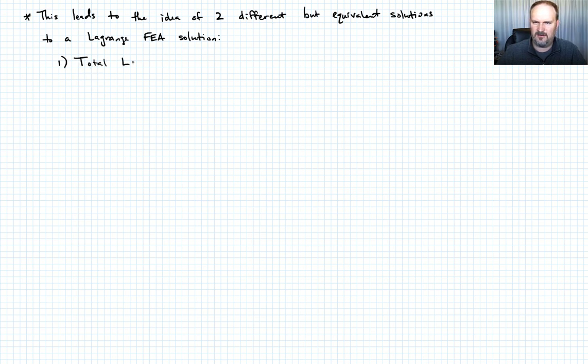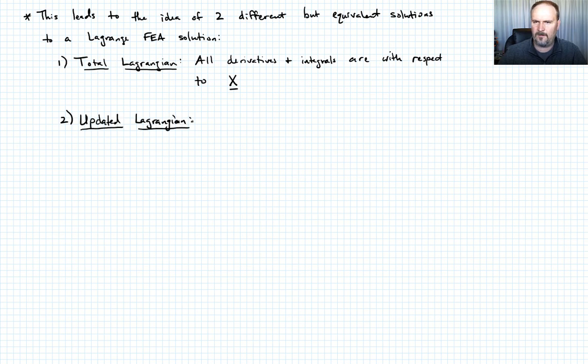So the total Lagrangian approach, all of the derivatives and integrals are going to be with respect to X, our material point. In what's called the updated Lagrangian, all derivatives and integrals are with respect to the current position C.